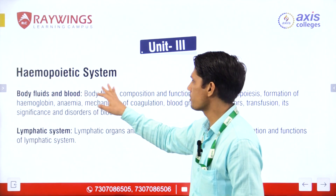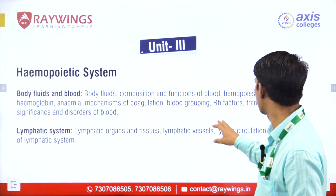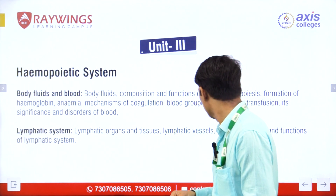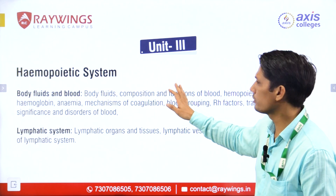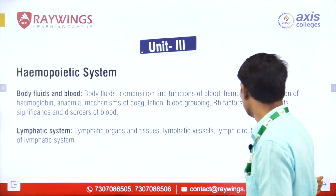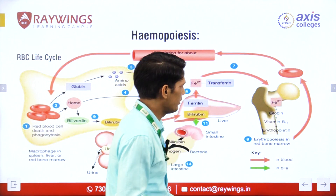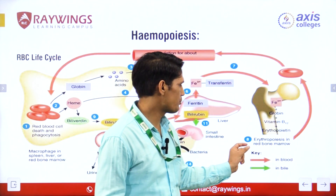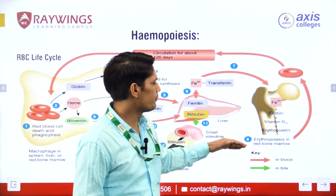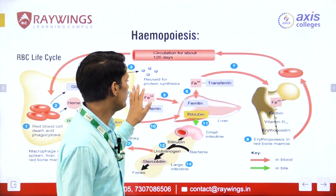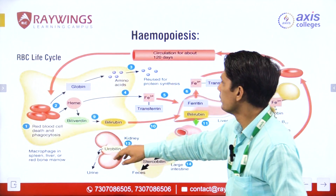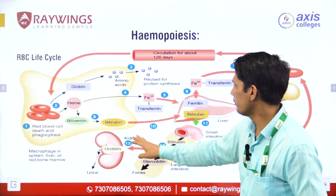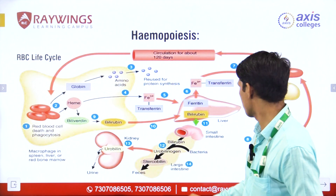The third unit covers the hemopoietic system, body fluids, formation of RBCs, WBCs, anemia and mechanisms of coagulation. Hemopoiesis is the formation of RBCs in the bone marrow — ferrous ions, globulin, vitamin B12 and erythropoietin combine together and erythropoiesis takes place in red bone marrow. The life of an RBC is 120 days and they are destroyed in the spleen. Globin converts into amino acids for protein synthesis, heme converts into transferrin, and bilirubin goes to the liver and is secreted through the feces.